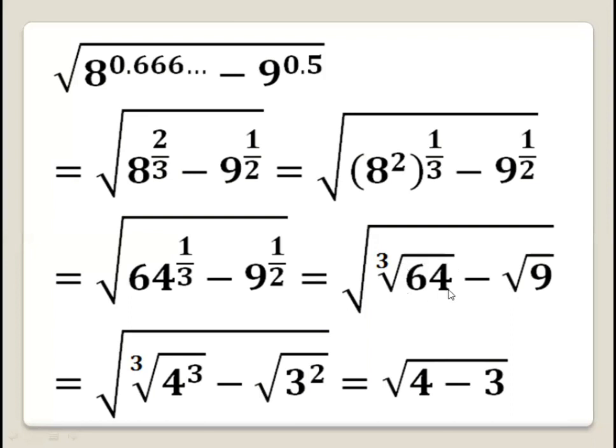Now we have 64, which equals 4 to the power 3, and 9 equals 3 squared. So the number is square root of cubic root of 4 cubed, minus square root of 3 squared.